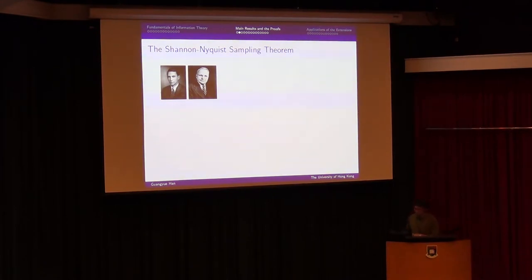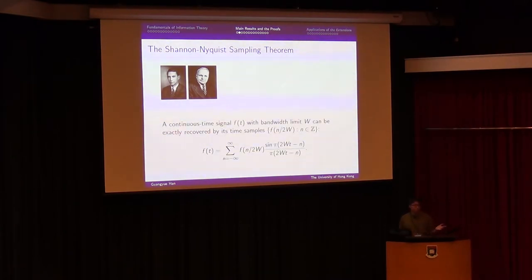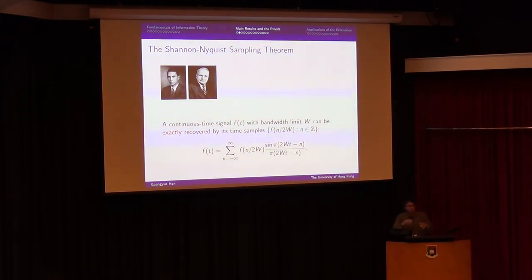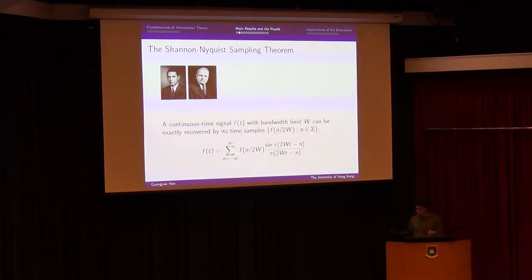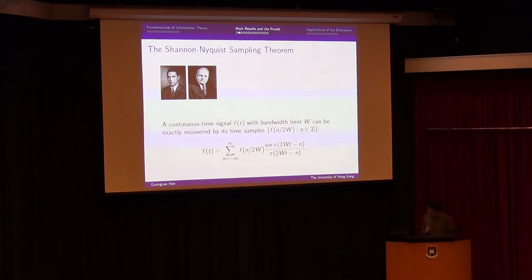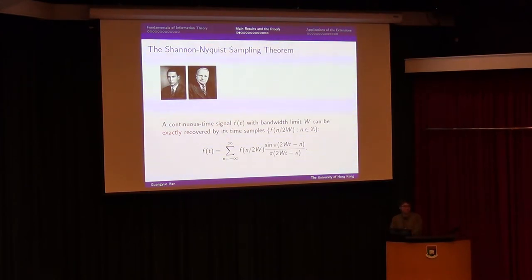Now I'm ready to talk about the main results of this talk. Let me start by reviewing the Shannon-Nyquist Sampling Theorem. This theorem says that if we have a continuous-time signal f(t) that is band-limited to bandwidth W, then we can take discrete time samples at rate 2W, and the continuous-time signal can be exactly recovered from those samples.